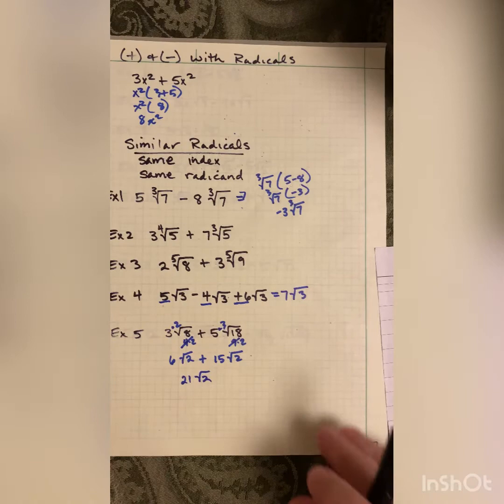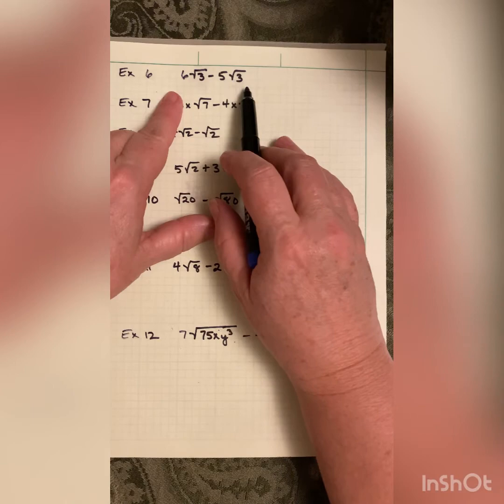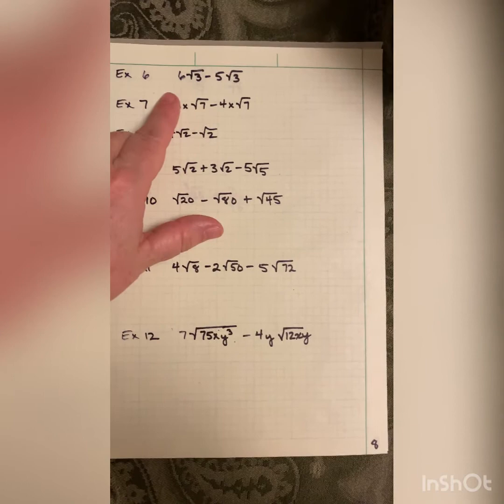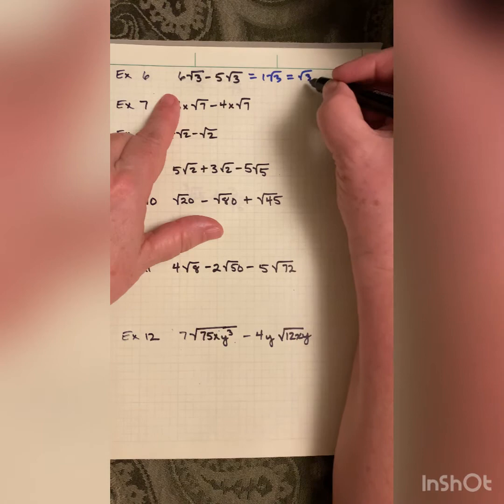Practice: 6√3 minus 5√3 — like terms, so combine coefficients: 6 minus 5 equals 1, giving 1√3, or just √3, since there's an implied 1 in front.